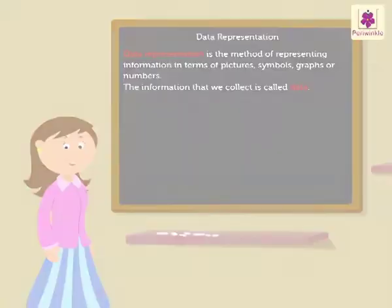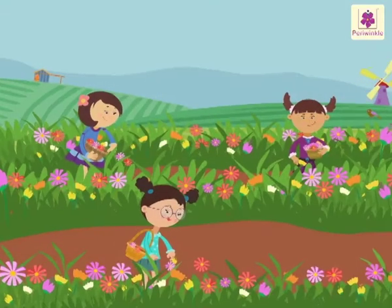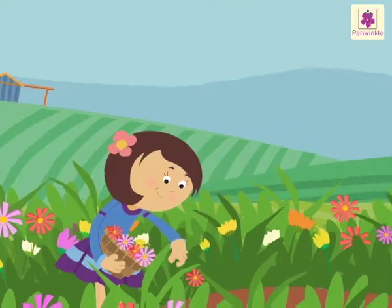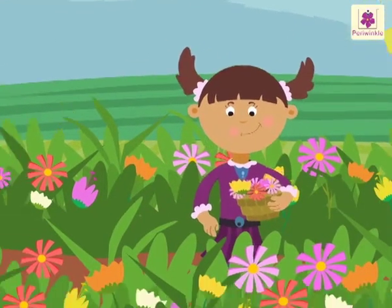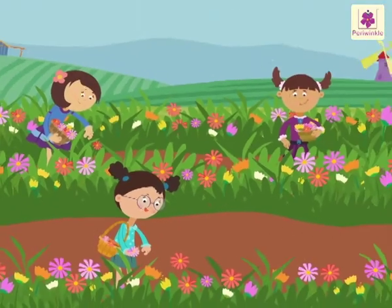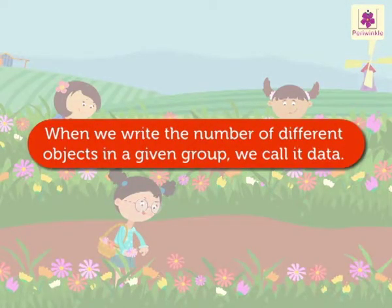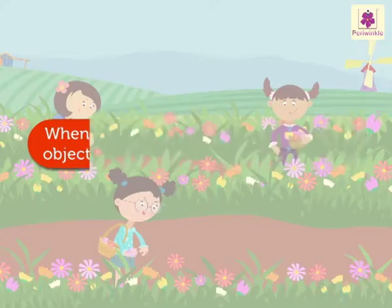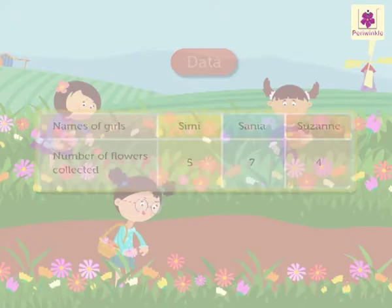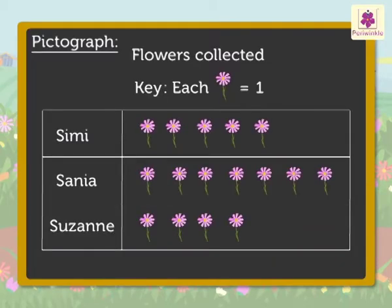One of them is pictograph. Look at the flower farm. Simi collected five flowers, Sanya collected seven flowers, and Suzanne collected four flowers from the farm. When we write the number of different objects in a given group, we call it data. The data given in the flower farm example can also be represented by drawing pictures. It is called a pictograph.